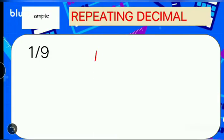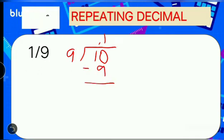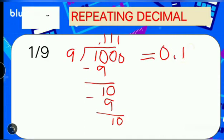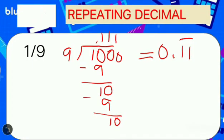For our repeating decimal example: 1 over 9. Place 1 inside the division bar and 9 outside. Since 1 can't be divided by 9, we make it a decimal — add a decimal point and 0. 10 divided by 9 is 1. 1 times 9 is 9. 10 minus 9 is 1. Add another 0. 10 divided by 9 is again 1. 1 times 9 is 9. 10 minus 9 is 1. As you can see, it just keeps repeating. The answer is 0.1111... and so on. We can write it as 0.1 with a bar on top called the vinculum.